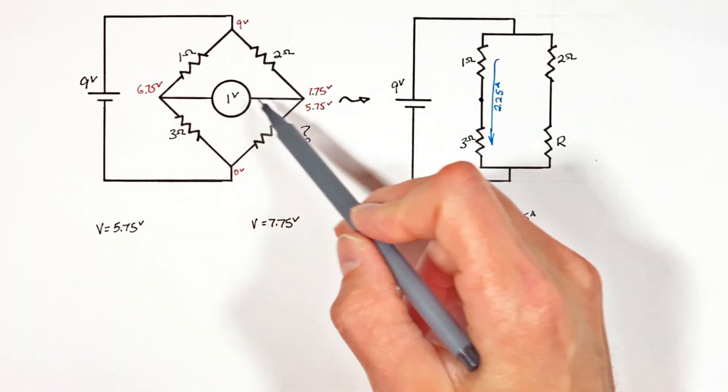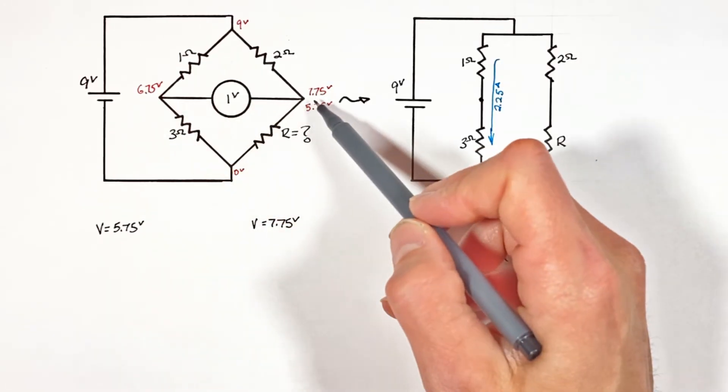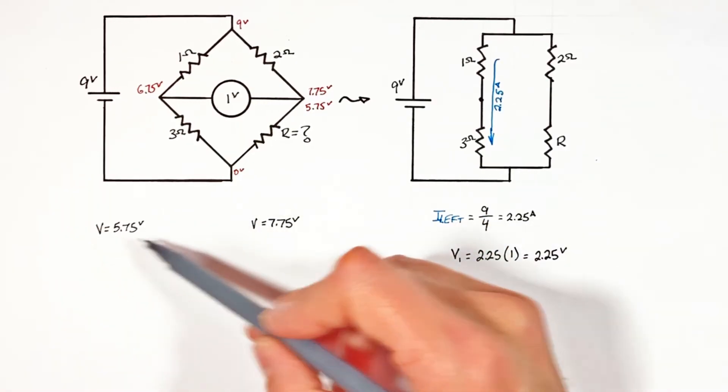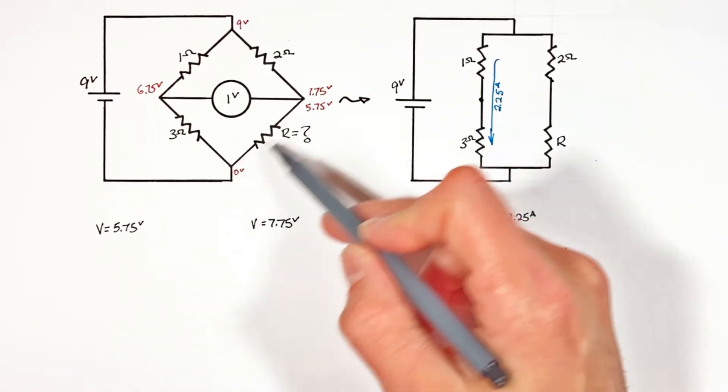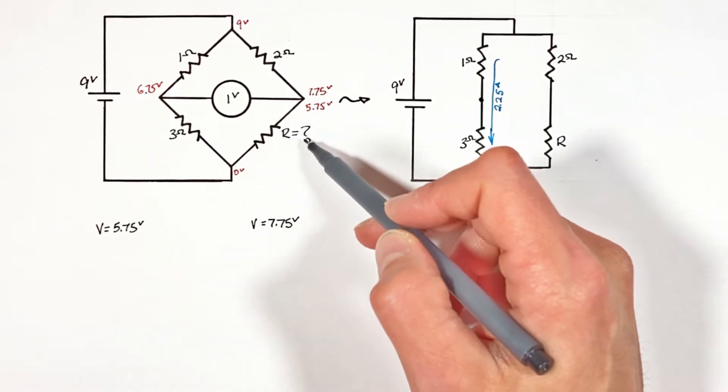And regardless of whether the voltage increases or decreases in going across this bridge the solution for both of these is going to follow the same method, it will just result in two different results for this unknown resistor.